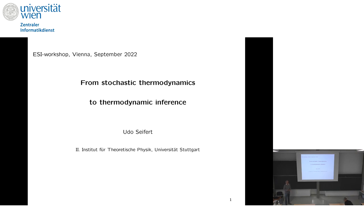Thank you very much Satya, and I'd also like to thank the organizers for putting this together. It's wonderful after this corona break to be back and to discuss physics in person. The title indicates a certain shift in perspective which the field underwent over the last five or six years. Originally the attempt was a successful attempt to derive exact relations — the Jarzynski relation, the fluctuation theorem. More recently we're using these tools to infer properties of systems that are not otherwise directly accessible. That's the story I want to tell you today.